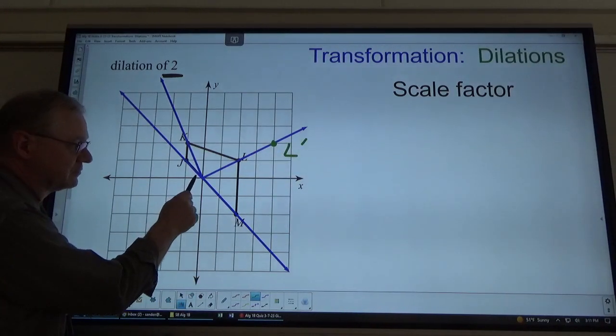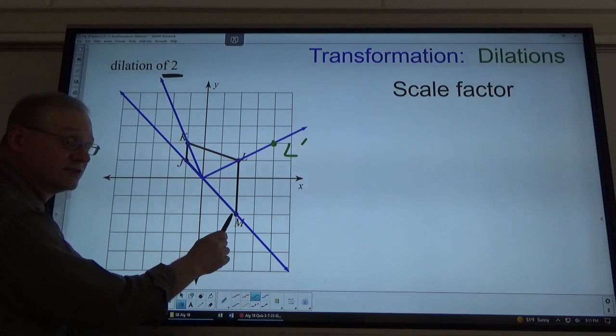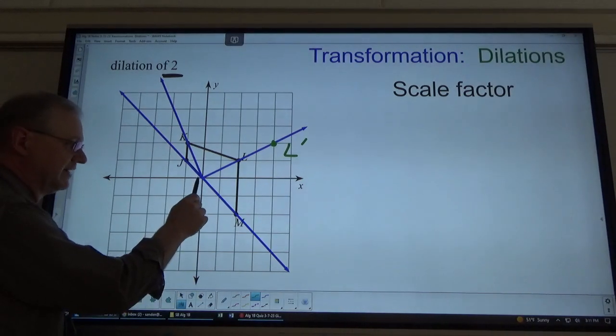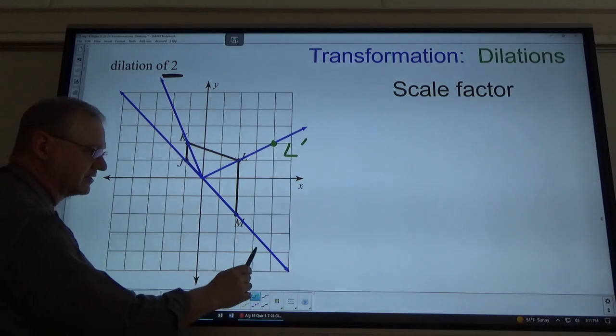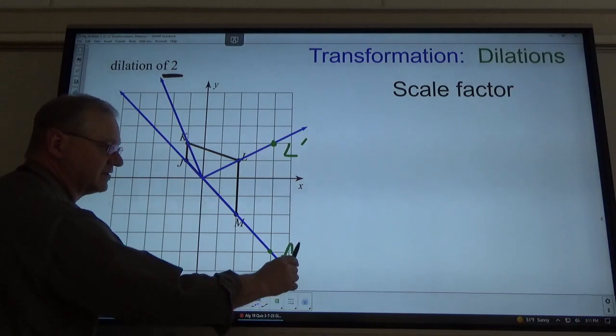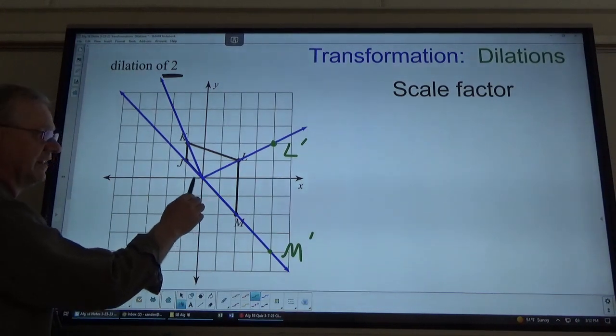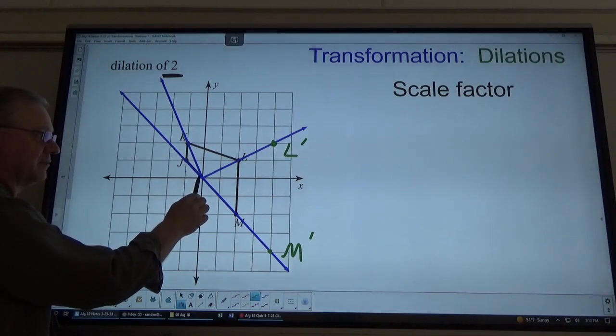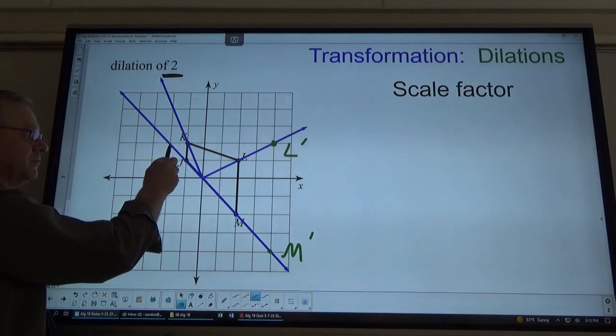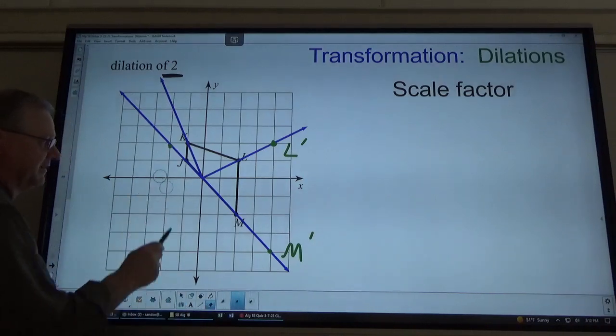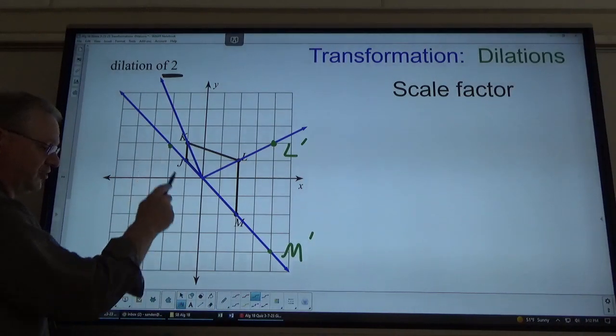M, I have to go down two and right two. So, I'm going to do double that. Down four, right four. And there's M prime. J is left one up one. So, I have to double that. Left two up two. And finally, that's J prime.